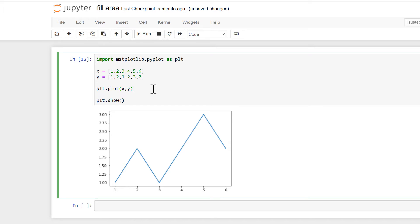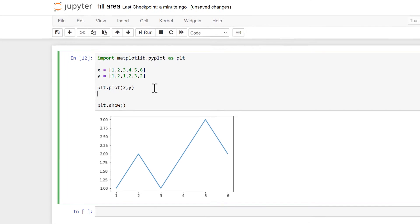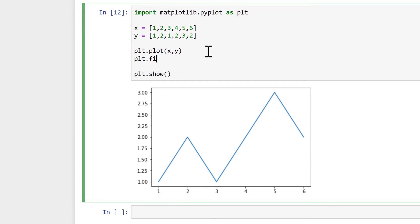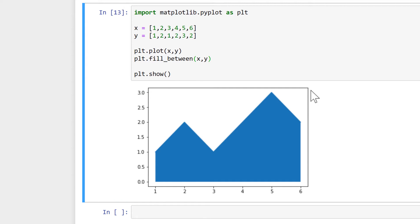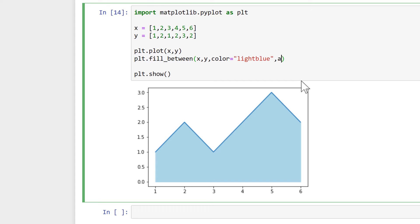Now in order to get a filled area, we'll do plt.fill_between and then we'll put the X and Y values again. And we get a filled area. Now we can format this. We'll change the color to be light blue and then also give it an alpha to make it transparent.